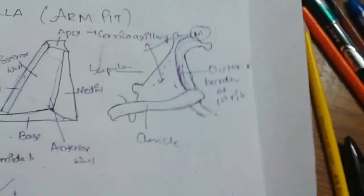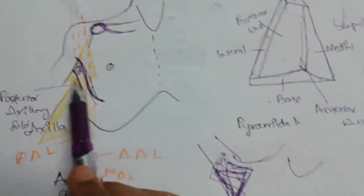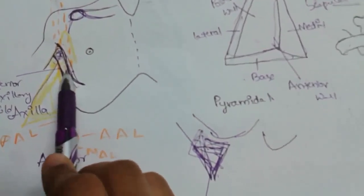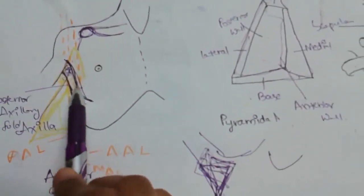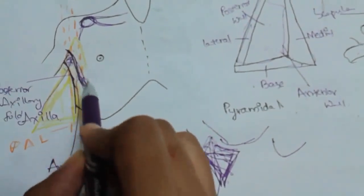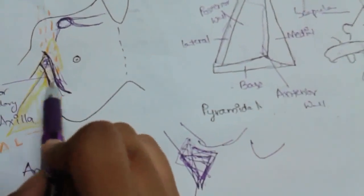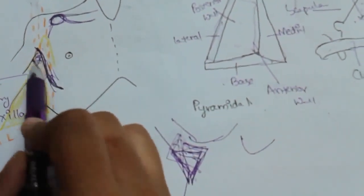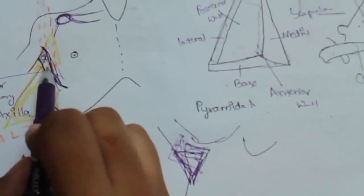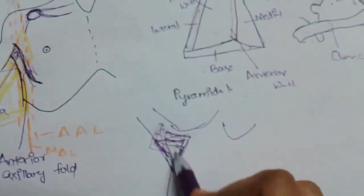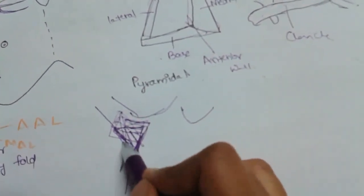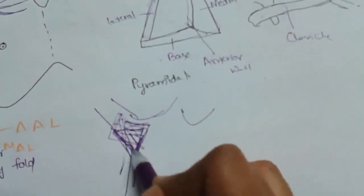The base is the lower end of the axilla. It corresponds to the hollow bounded in front by the anterior axillary fold and behind by the posterior axillary fold. So the base is the free, lower end between these two axillary folds.